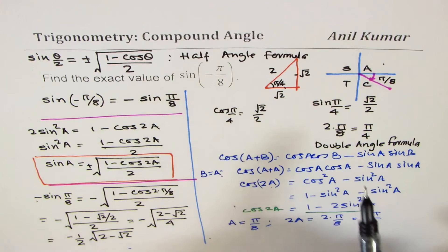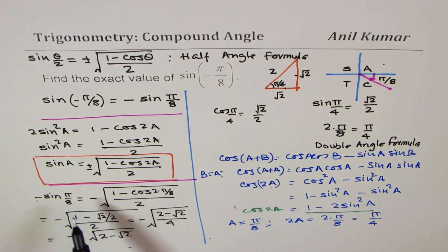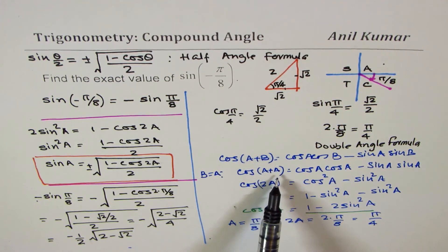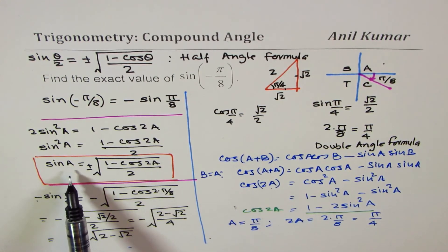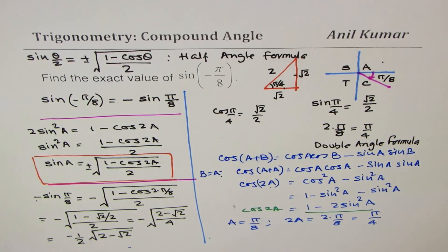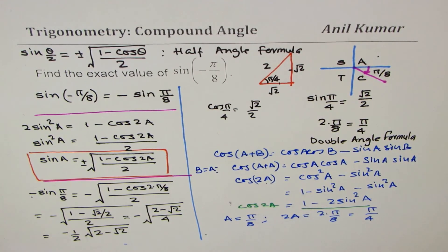You can see how in compound angles all the formulas are related — it's not difficult to remember them. You can always start with the general cos(a+b) formula, substitute a = b to derive the double angle formula, then substitute a = θ/2 to get the half-angle formula. I hope this video helps you understand and appreciate the links between these formulas. Feel free to write your comments, share your views, and if you like and subscribe to my videos, that will be great. Thank you and all the best.